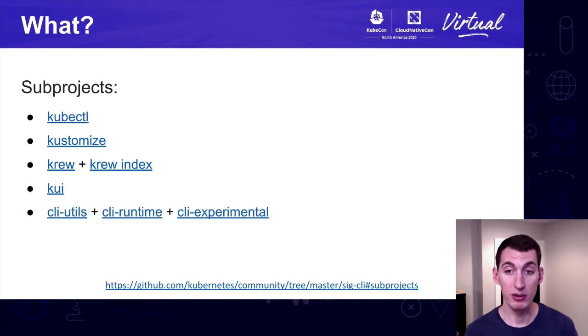We're made up of a handful of different sub-projects. Kubectl is the command line tool that you use to talk to a Kubernetes cluster. Kustomize lets you modify and manipulate YAML manifests without making changes to the original. Krew and the Krew Index is the package manager for kubectl plugins. I think we're up to 120 plugins right now, so you should definitely go check some of those out. CUI is an awesome project that provides an interactive graphical tool that you can use to work with kubectl and its output. And then we have a bunch of other libraries that are used for building command line tools.